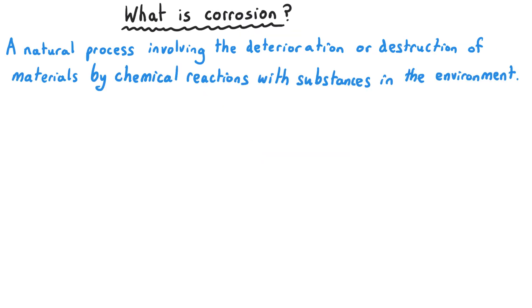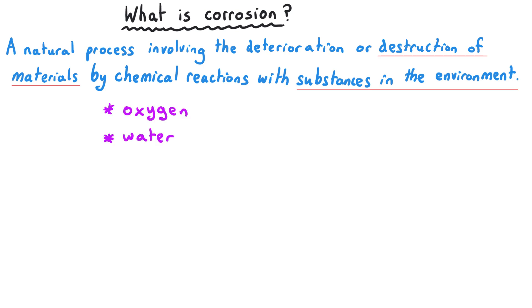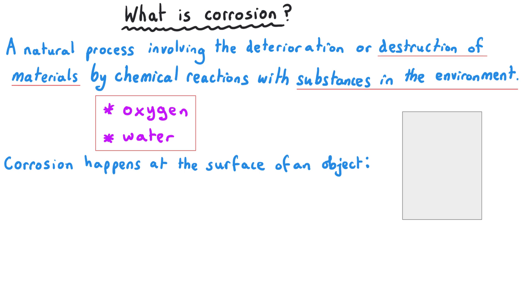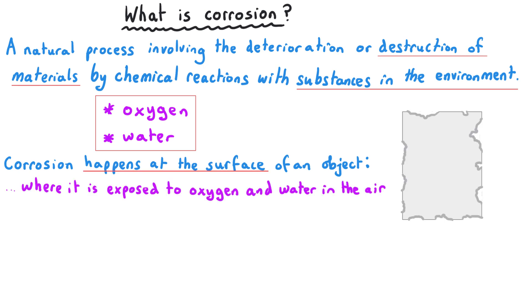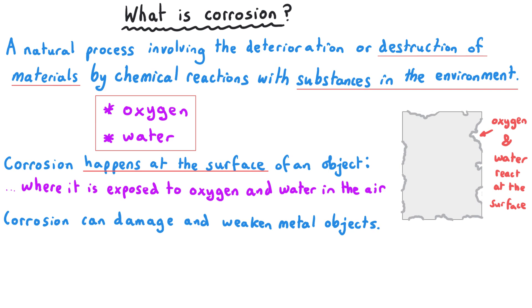Corrosion is a natural process that involves the deterioration or destruction of materials by chemical reactions with substances in the environment, specifically oxygen and water. Corrosion only happens at the surface of the metal where it's exposed to the air and to water. The process of corrosion not only affects the appearance of the metal but also its structural integrity, and this can lead to potential safety hazards.